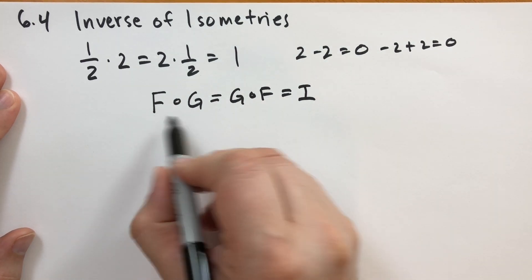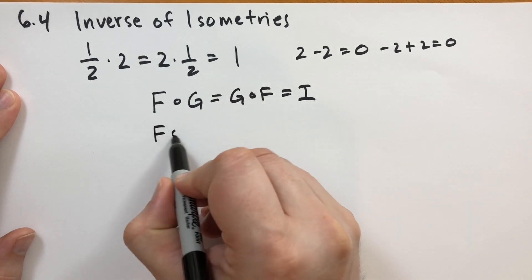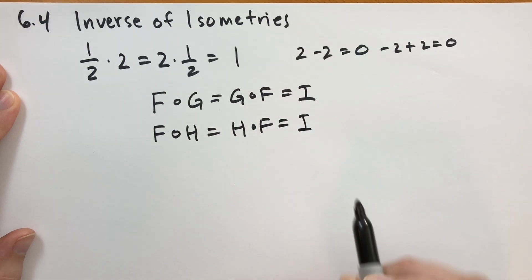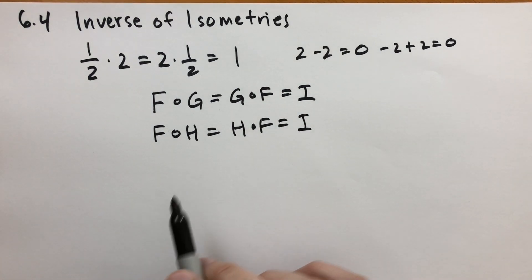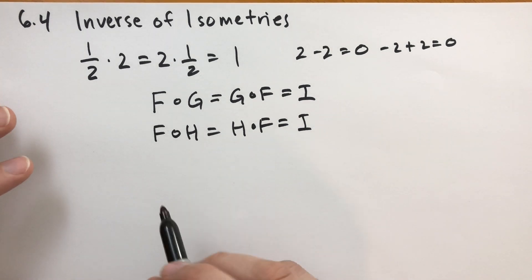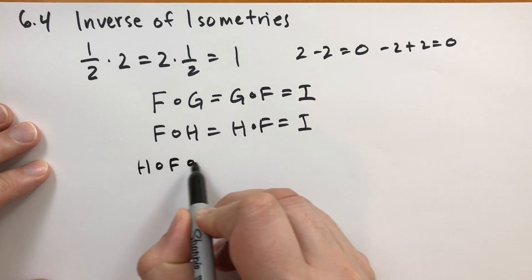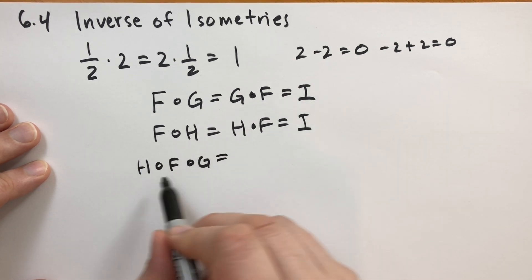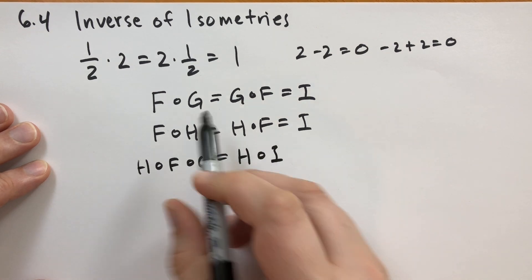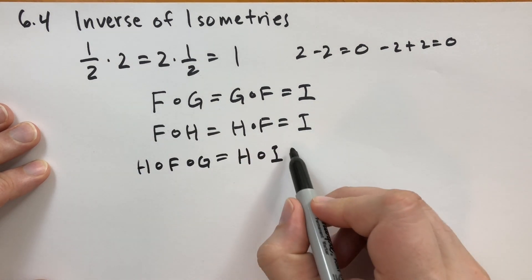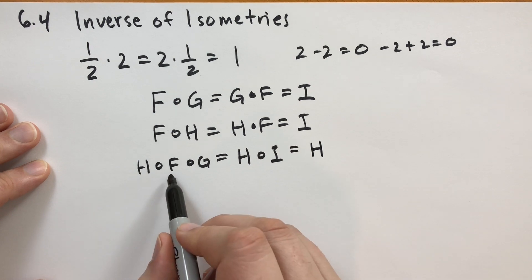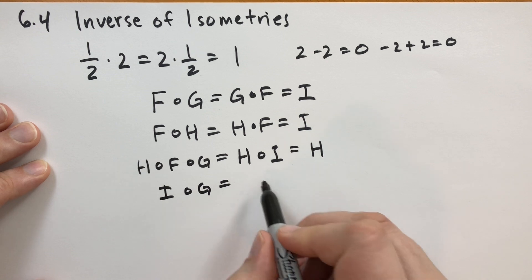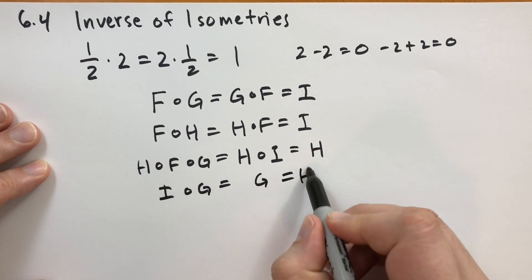So the question is: is there another inverse of F? Say we had another isometry H that we can compose with F and get back the identity. Are G and H the same? We take H composed with F and G together, and on one hand if we do F and G first we get H composed with I, which is just H. On the other hand, if we do H and F first, H and F gives I composed with G, which is just G. So we find G and H are actually the same.